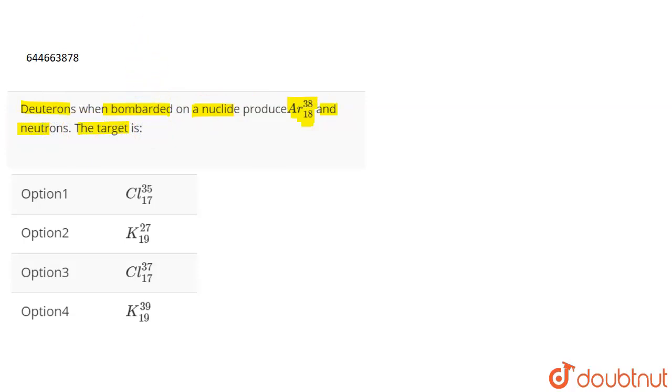Now, if we talk about this, a nucleide, let the nucleide be X-A-Z. Now, this A represents the mass number, Z represents the atomic number. Similarly, in argon 38-18, 38 is the mass number, 18 is the atomic number.